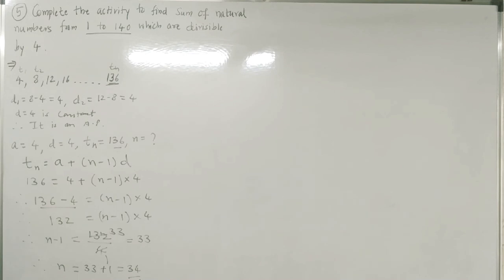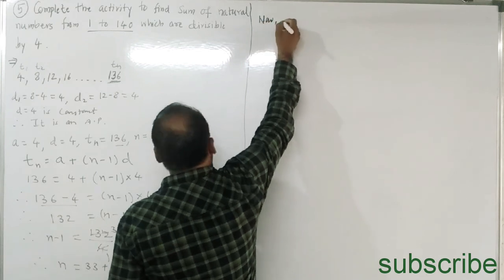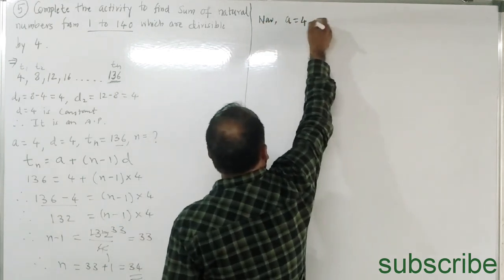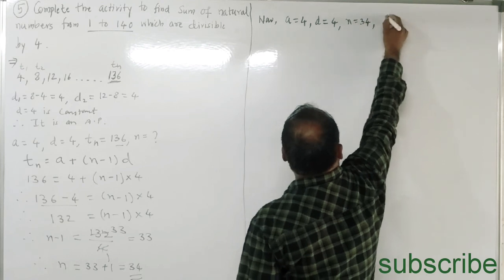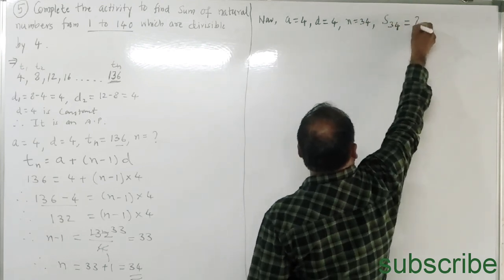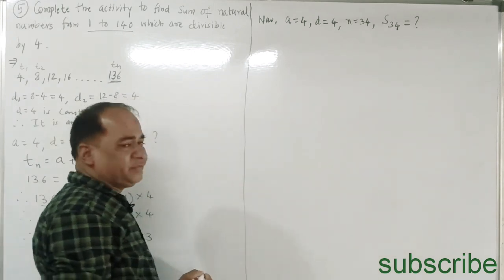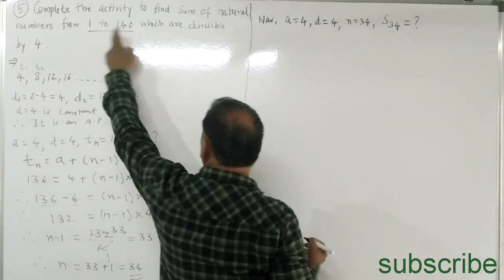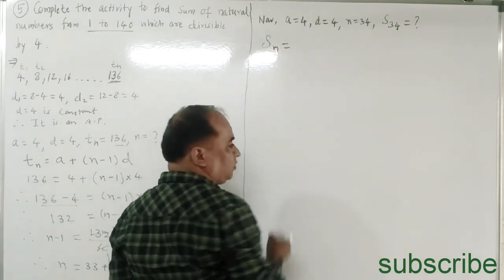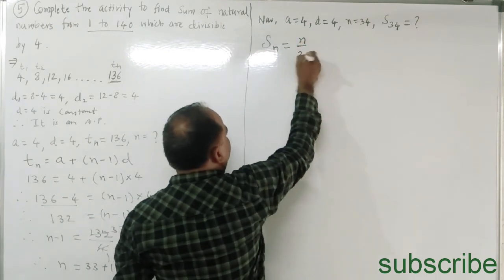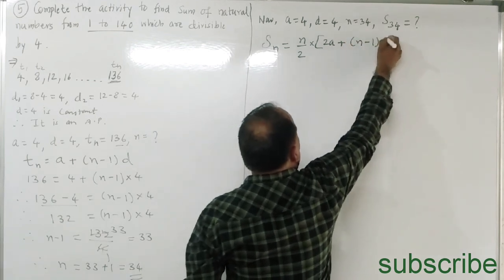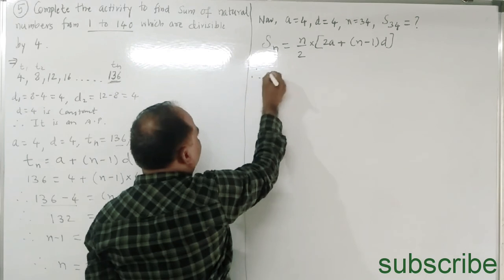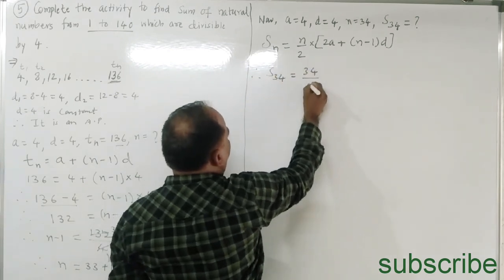There are 34 natural numbers divisible by 4 from 1 to 140. With a = 4, d = 4, and n = 34, we find S34 using the formula Sn = n/2 × (2a + (n−1)d).